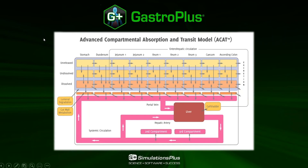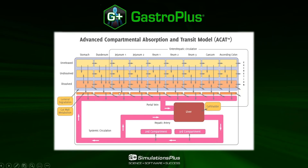In each compartment, the drug can be in three states: either unreleased for controlled release formulations, undissolved if the drug precipitates at a certain pH, or dissolved. Only the drug that is dissolved can be absorbed into the enterocyte layer. Once the drug is in the enterocyte, it can either be metabolized or transferred into the portal vein, finally reaching the liver.